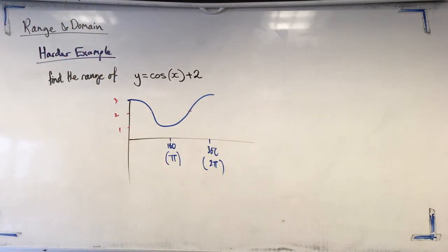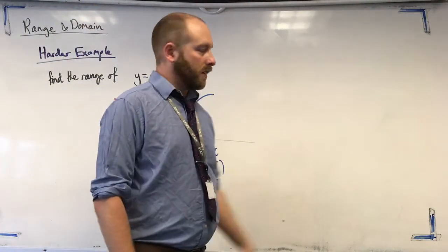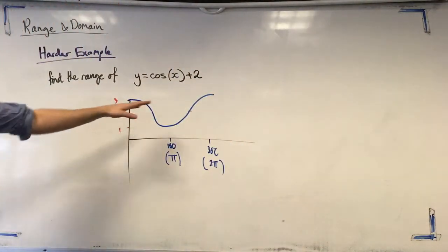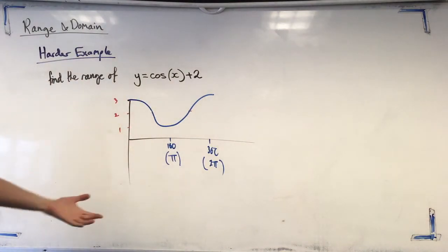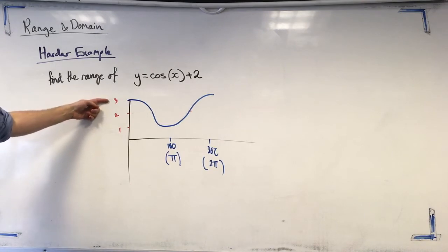So, we need to find out what the range of this is. Well, we haven't been given a domain. We won't always be given a domain. This actually just keeps repeating, so it's not going to change outside of this domain that I've drawn anyway. So, what's our maximum y value? 3. What's our minimum y value? 1.